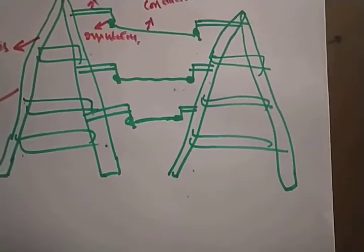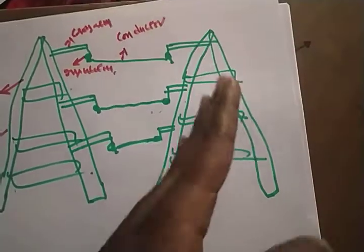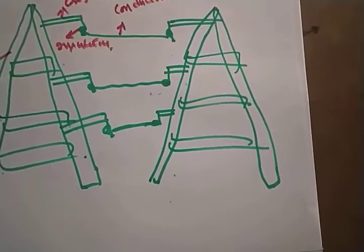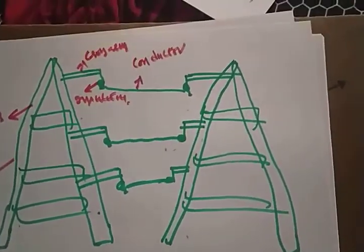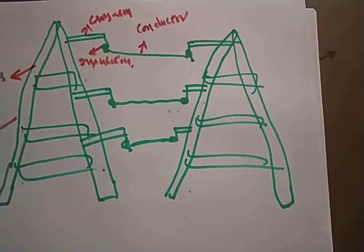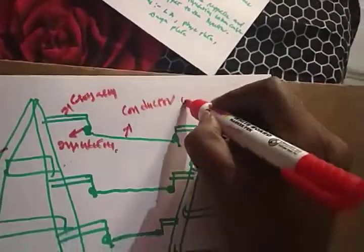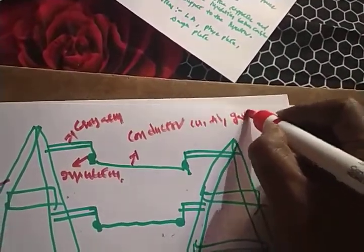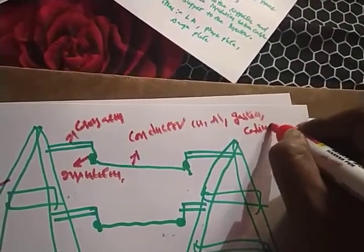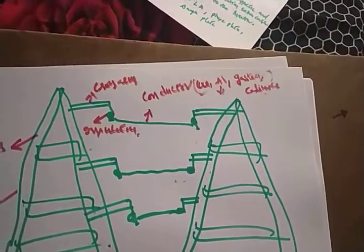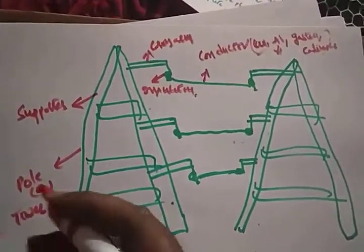The conductor carries electrical power from one end to another — from sending end to receiving end — for transmission and distribution. Depending on line length it can be a long or medium transmission line. Conductors are made up of copper, aluminum, galvanized steel, and cadmium copper. Basically nowadays we are using aluminum only.